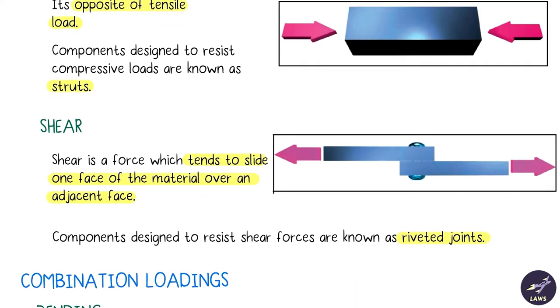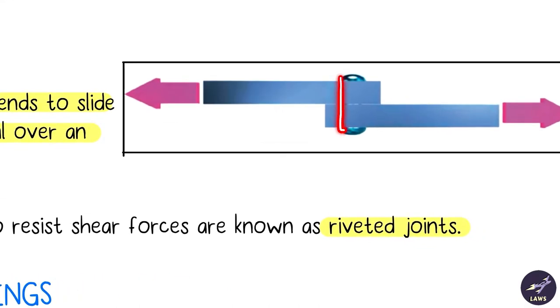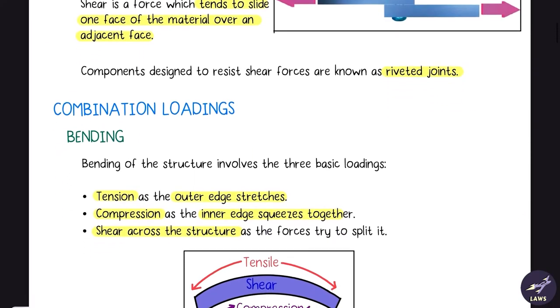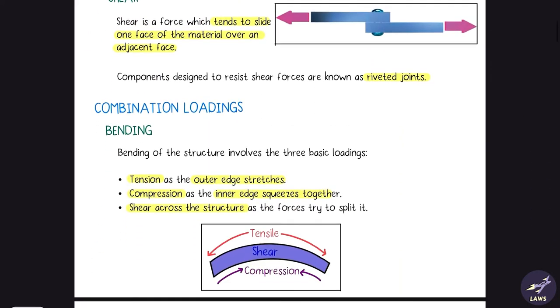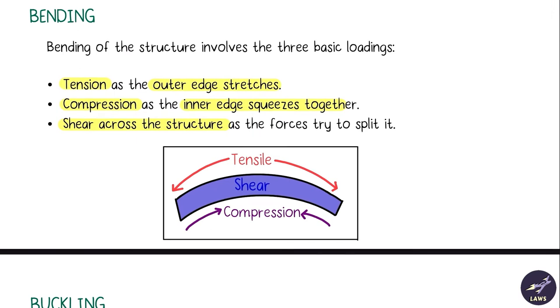Then we have shear. It has two plates and one plate is sliding over the other plate. To resist shear we have riveted joints. Then we have combination loads, which is the combination of these three: tension at the outer edges, compression in the inner edges, and shear across the whole structure.